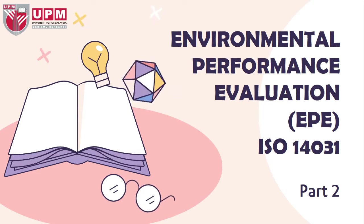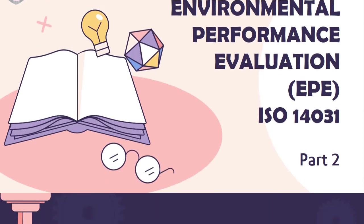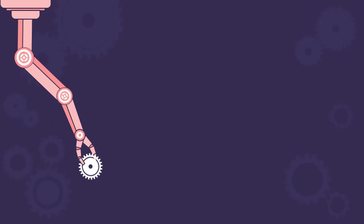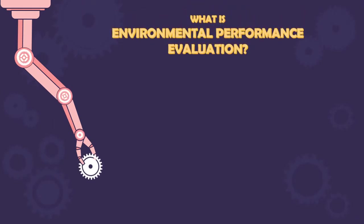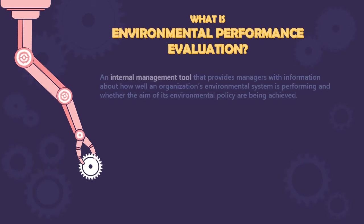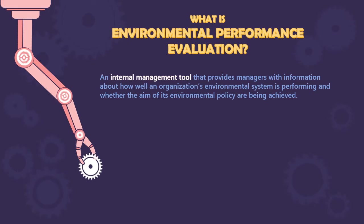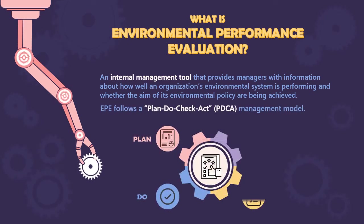Hi, welcome back to Environmental Performance Evaluation (EPE) ISO 14031 Part 2. Before we start, let's do a little recap on the previous video. EPE is an internal management tool that provides managers with information about how well an organization's environmental system is performing and whether the aims of its environmental policy are being achieved. EPE follows a Plan-Do-Check-Act (PDCA) management model.